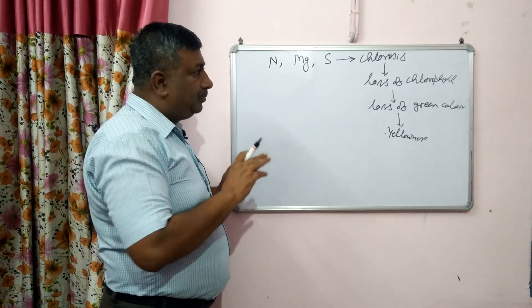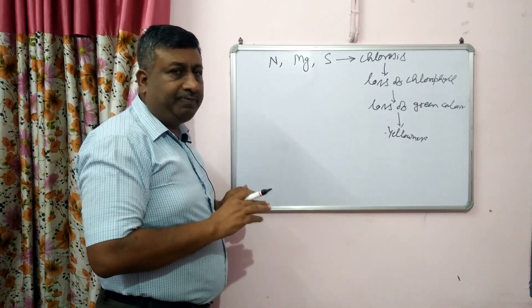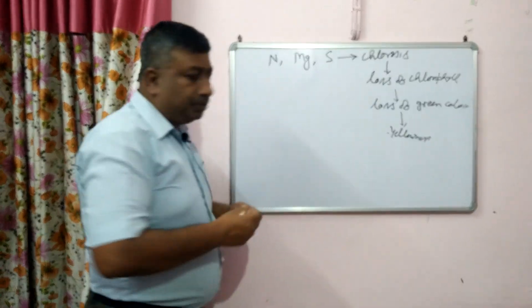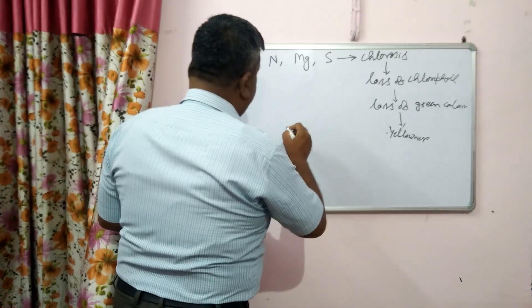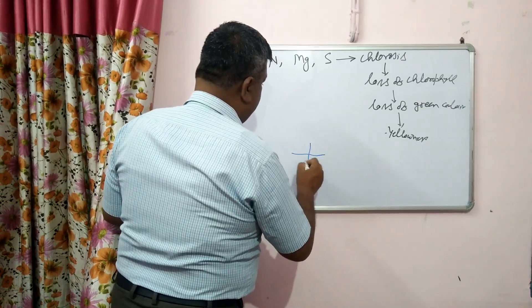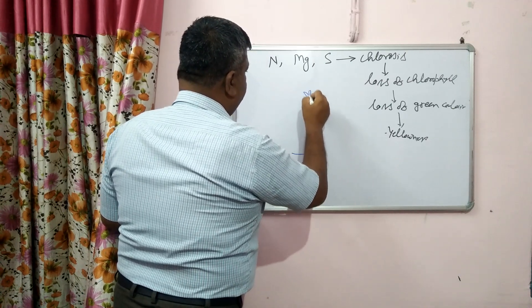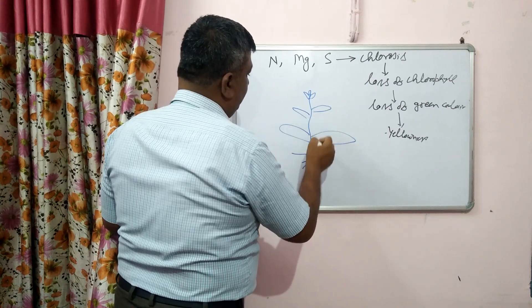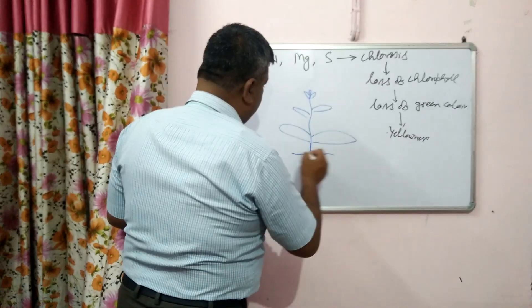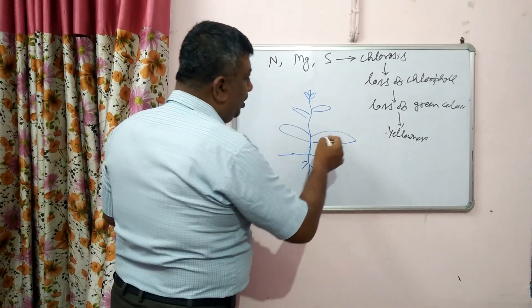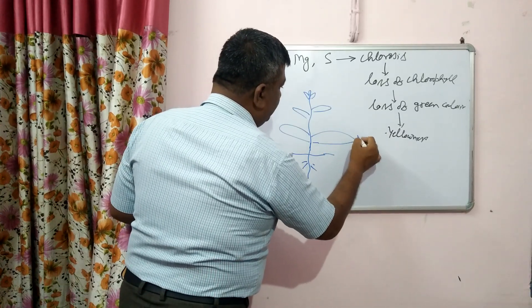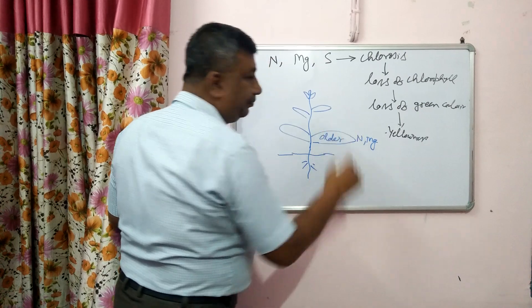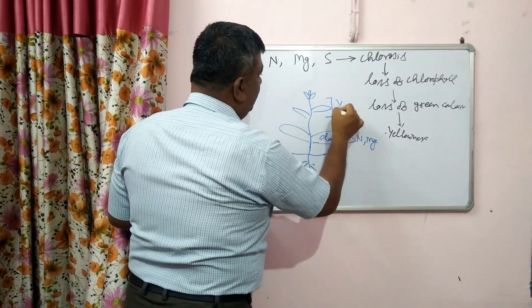But what is the key difference between these nutrients? In a plant we have new leaves at the top, middle leaves, and older leaves at the bottom. In the case of nitrogen and magnesium deficiency, the deficiency first occurs on older leaves. But sulfur deficiency occurs on younger leaves.